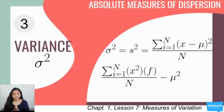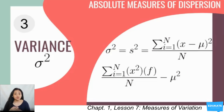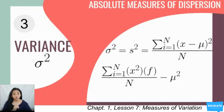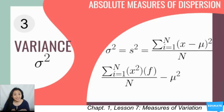The third measure is variance, denoted by sigma squared. Variance is computed as the summation of the squared difference of every data point and the mean, all divided by the total number of observations N. Another way to compute variance is the summation of the product of the square of each data value and its frequency, divided by N, minus the square of the mean.